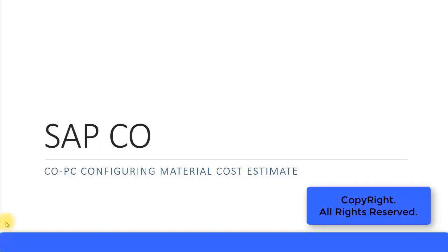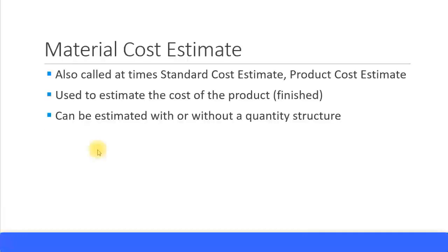In this presentation we look at configuring the material cost estimate. The material cost estimate is sometimes called a standard cost estimate or a product cost estimate. By definition, it is used to estimate the cost of a product — specifically the finished product or finished goods — because we do not need to estimate the cost of raw materials or packaging materials since we already know the price when procuring externally.